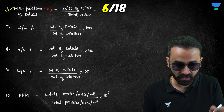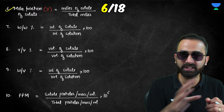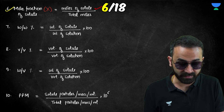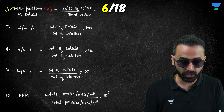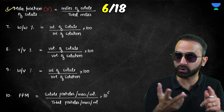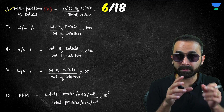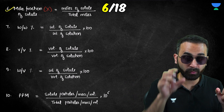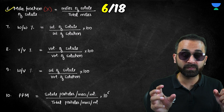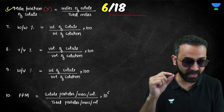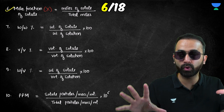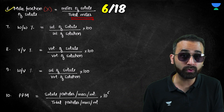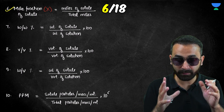Formula number six is mole fraction. The mole fraction of any species equals its number of moles divided by the total number of moles. You can calculate it for solute or solvent. If there are four components, the mole fraction of one component is its moles divided by the total moles of all four components — the denominator must be the total moles in the entire mixture.